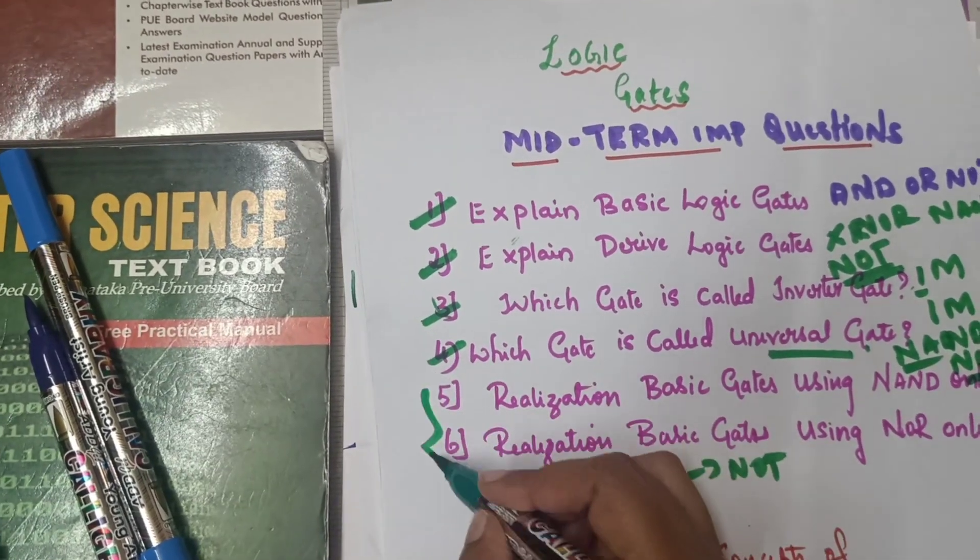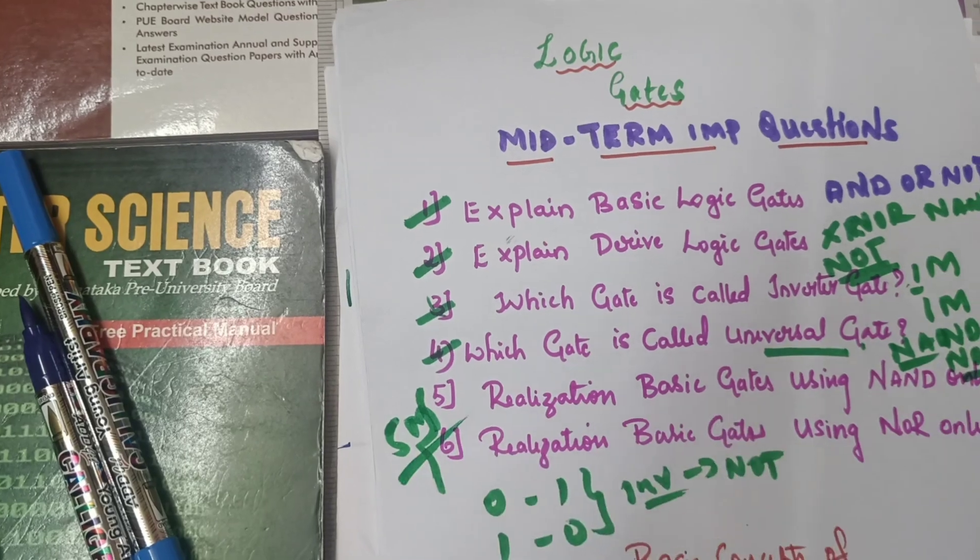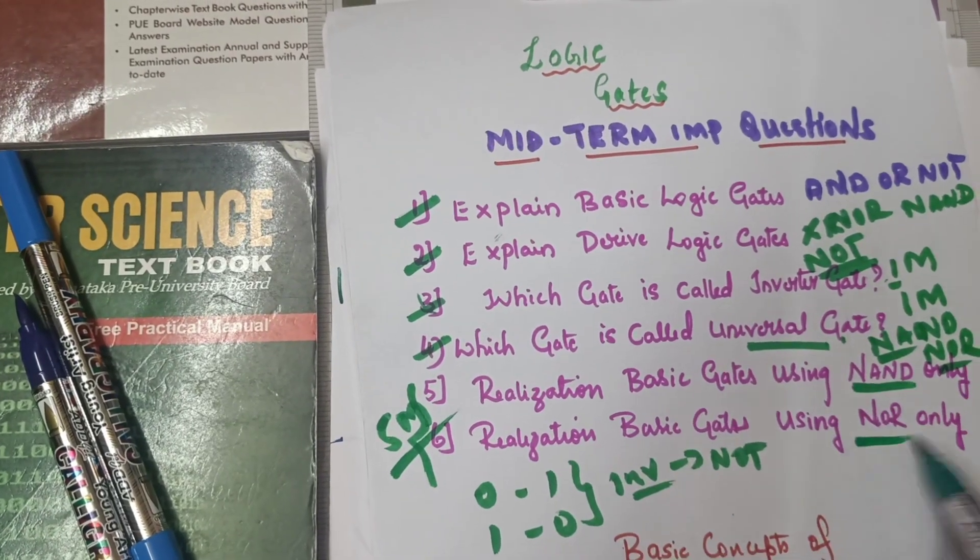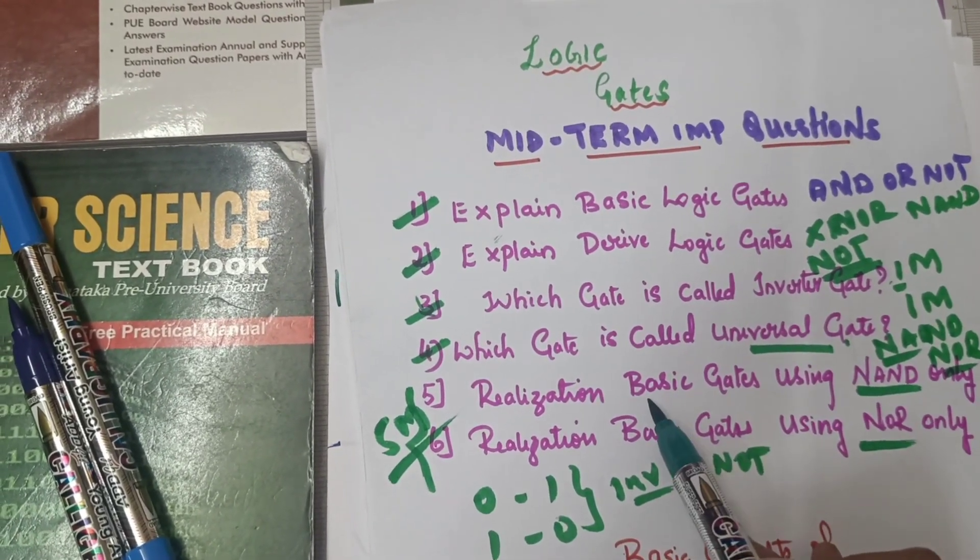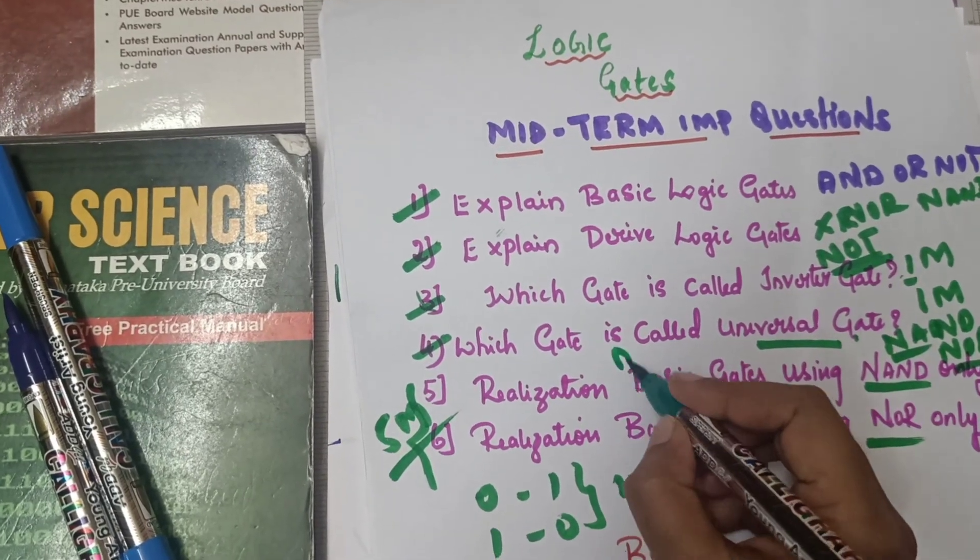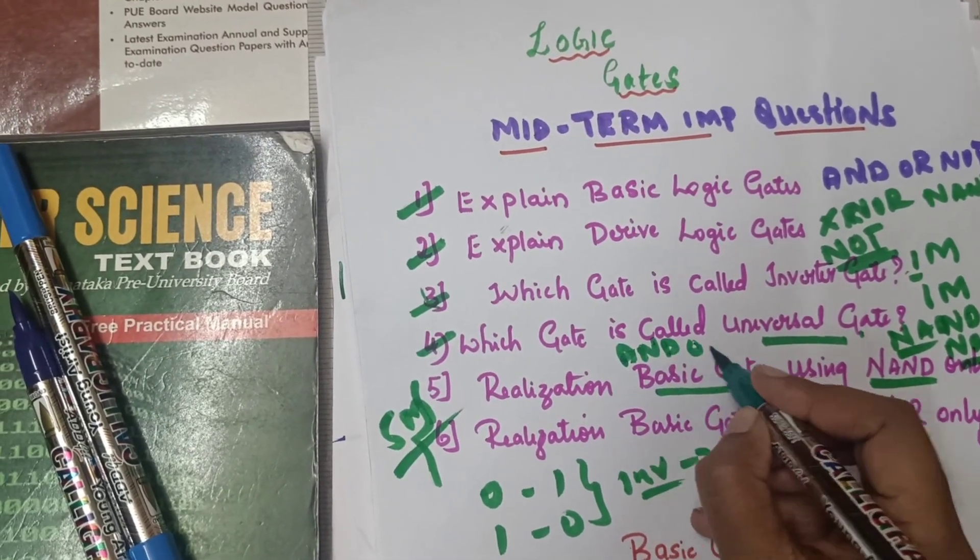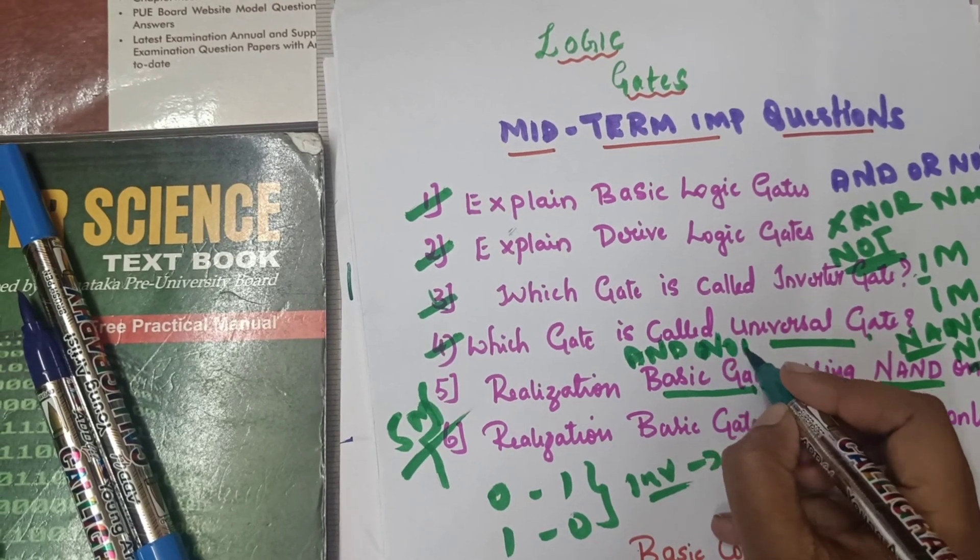These are 5 marks questions - realization of basic gates with NAND gate or basic gates with NOR gate. Sometimes this question is basic gates AND, OR, NOT. You are confused.